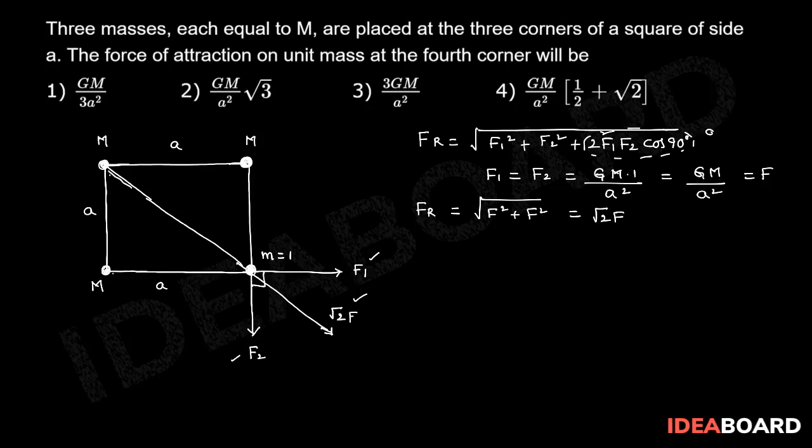Now the force on this unit mass from the mass M on the diagonal. Here the diagonal length is root 2A. That force F prime is equal to GM into 1 by root 2A whole square, that equals GM by 2A square, but GM by 2A square is nothing but F by 2.